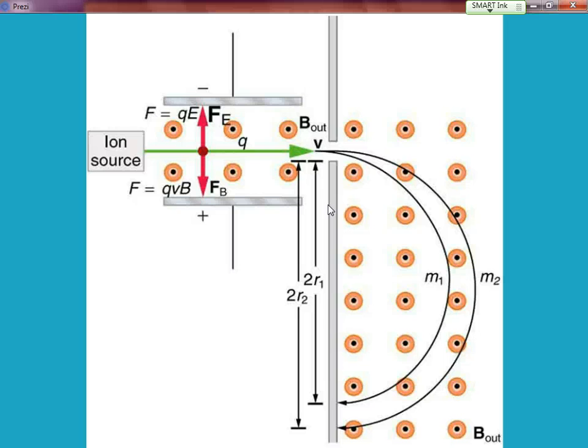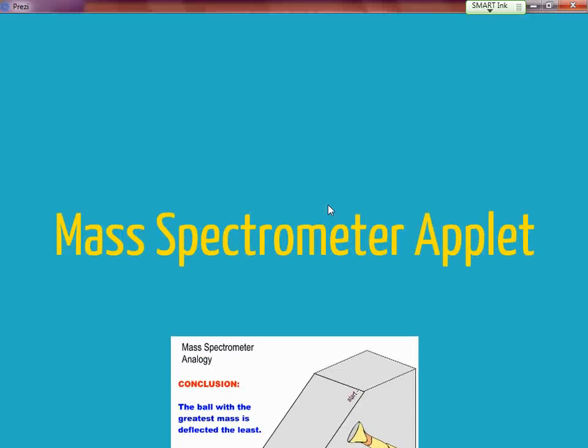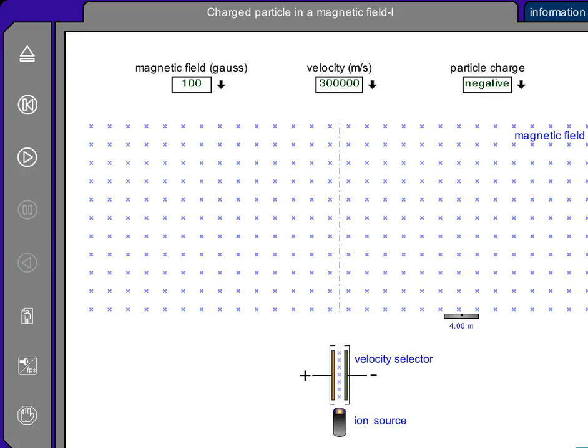Over here, you can see that different sources with different masses would end up with different radii. And scientists can look at where the particle lands to determine what the mass exactly is. If we take a look over here, here's another representation.